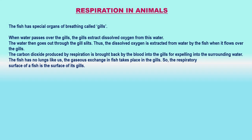Respiration in animals: The fish has special organs of breathing called gills. When water passes over the gills, the gills extract dissolved oxygen from this water. The water then goes out through the gill slits. Thus, the dissolved oxygen is extracted from water by the fish when it flows over the gills. The carbon dioxide produced by respiration is brought back by the blood into the gills for expelling into the surrounding water. The fish has no lungs; the gaseous exchange in fish takes place in the gills, so the respiratory surface of a fish is the surface of its gills.